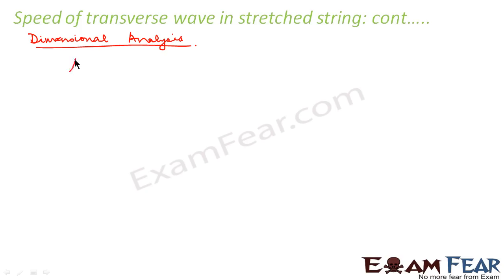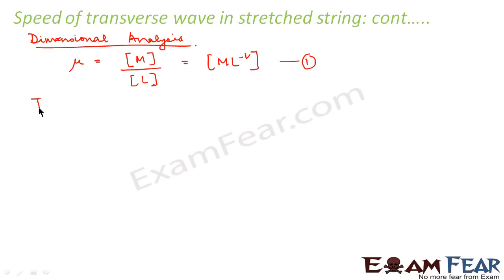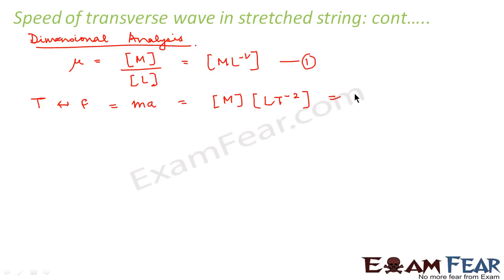Let us take the first factor, mass per unit length mu. Its dimension is mass per unit length, which equals M L to the power minus 1. Now the second factor is tension, which is nothing but force, so tension and force have the same dimensions. Force is mass into acceleration, which we write as M L T to the power minus 2. So the dimension of tension is M L T to the power minus 2.